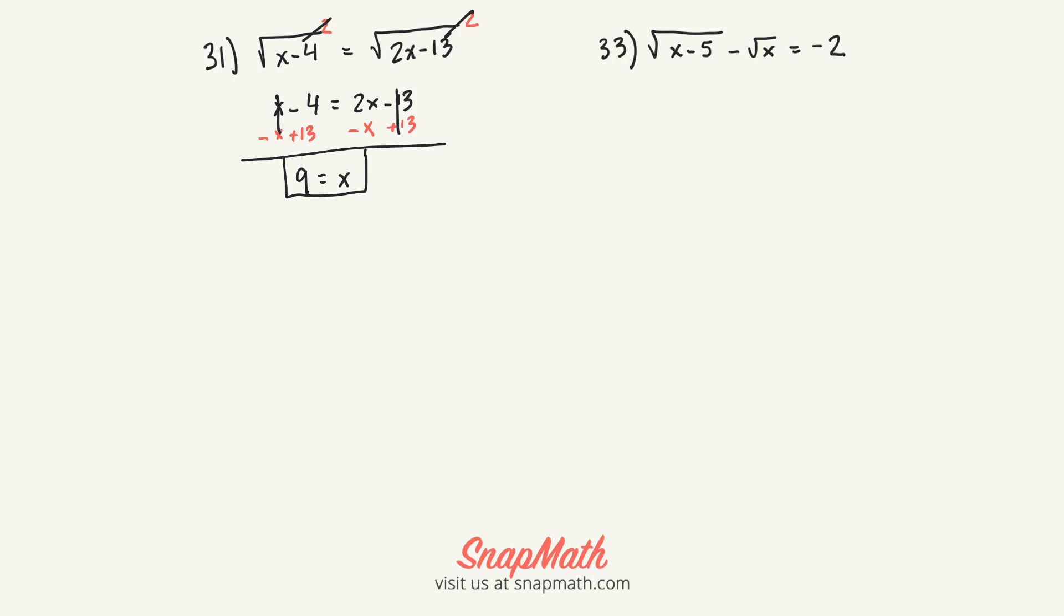Next one's a little bit more complicated. The first step is we're going to add the square root of x to both sides. Now we have the square root of x minus 5 equals the square root of x minus 2.